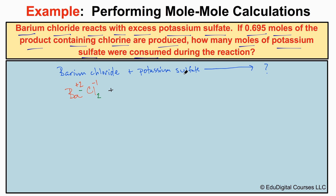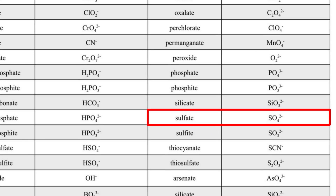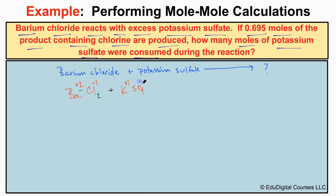Potassium comes from group one on the periodic table, so it loses one electron and forms a +1 ion. Sulfate, from a polyatomic ion list, is SO₄ with a -2 charge. The formula K(SO₄) is incorrect because those ionic charges don't add up to zero. We need to add a subscript of two, giving us K₂SO₄, so the ionic charges now add up to zero.